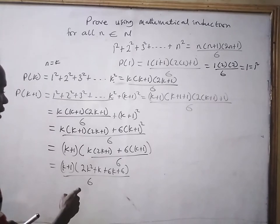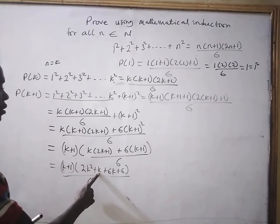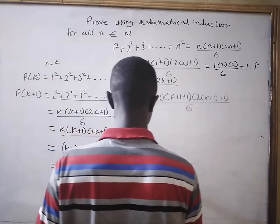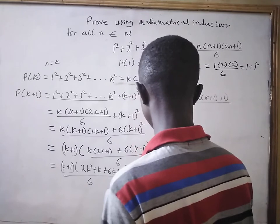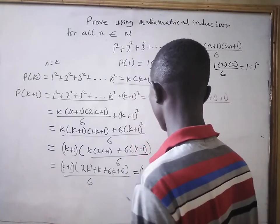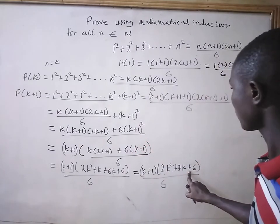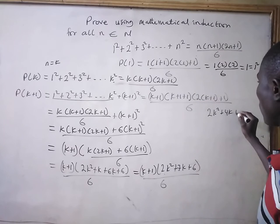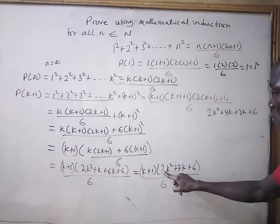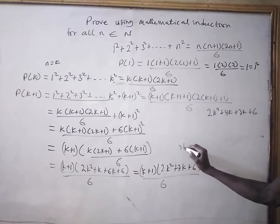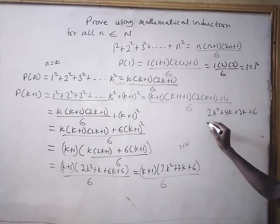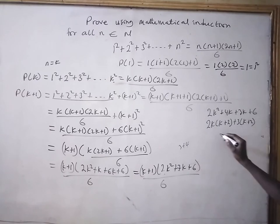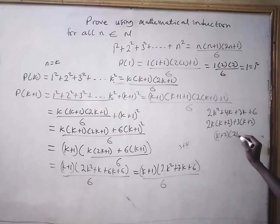Now, if we add k to 6k, we are going to get 7k. So, we are going to have (k plus 1) times (2k squared plus 7k plus 6) all divided by 6. This is a quadratic expression. We have 2k squared plus 4k plus 3k plus 6 — since 6 times 2 is 12, and the factors of 12 that sum to 7 are 3 and 4. So this will be 2k times (k plus 2) plus 3 times (k plus 2), which gives us (k plus 2) times (2k plus 3).